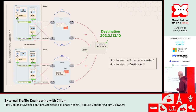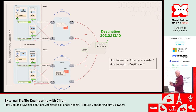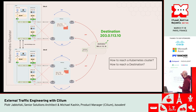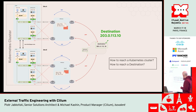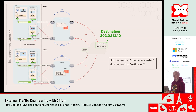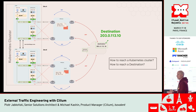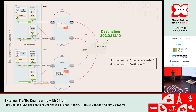To reach a Kubernetes cluster, we need to advertise the prefixes of pods or services outside. To reach a destination, we need to advertise that destination prefix to the Kubernetes cluster. Reaching a destination is straightforward — a default route is typically enough. The Kubernetes cluster does not require a full BGP table or hundreds of thousands of prefixes; a default route is sufficient.